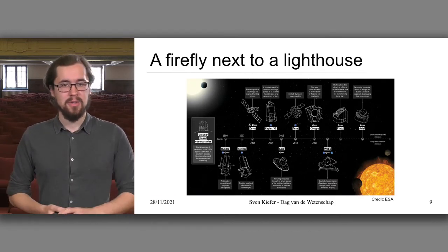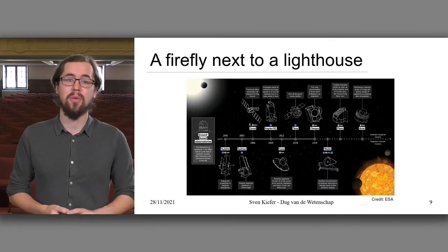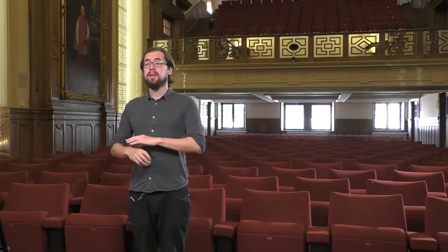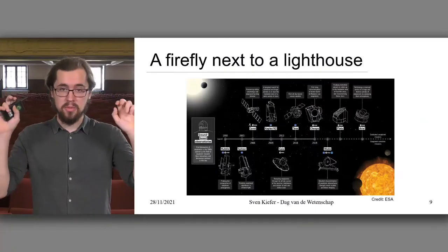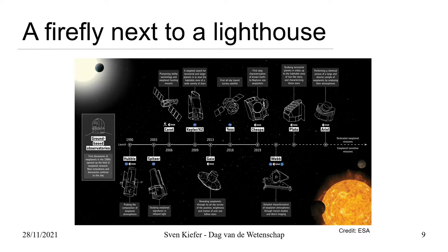Some of you might have heard of the James Webb Space Telescope, which we are very much looking forward to, because it is a next-stage instrument — with it we can really push new boundaries. We will gather information about exoplanets, stars, and our universe in general that we have not known before. James Webb is an enormous project with billions of dollars going into it, but there are also smaller projects like Plato and Ariel, which are there mostly to characterize exoplanets we already know.